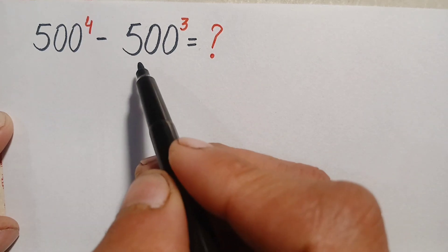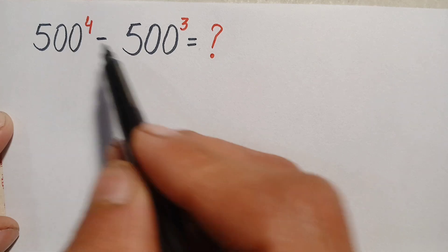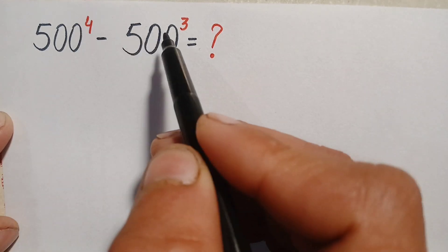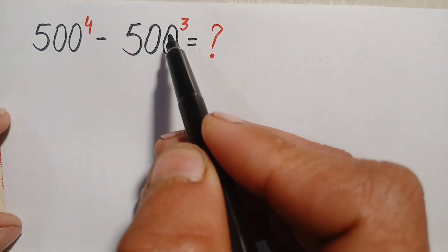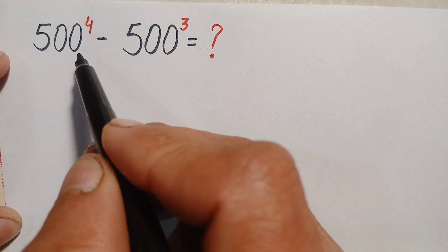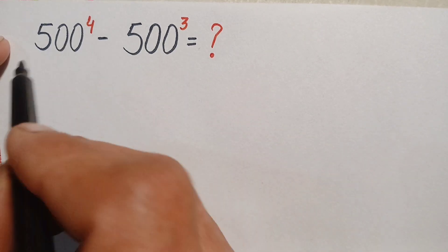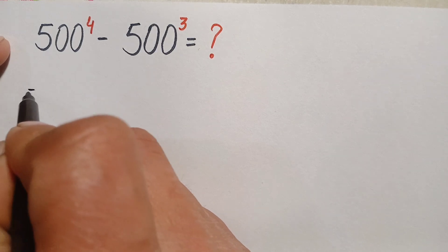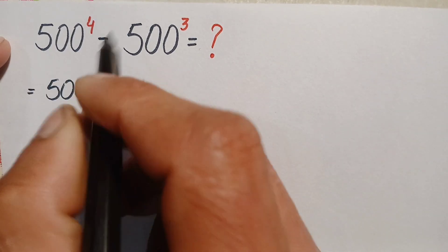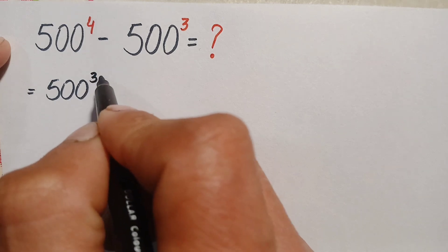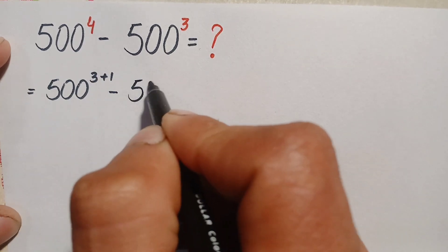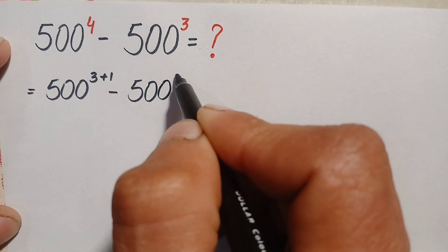We will try to make these two numbers the same, so we will make their powers the same. We will change power 4 to the sum of 3 plus 1, and then use an algebraic exponential identity. Therefore we can write this number as 500 raised to power 4, where 4 is written as 3 plus 1, minus 500 raised to power 3.